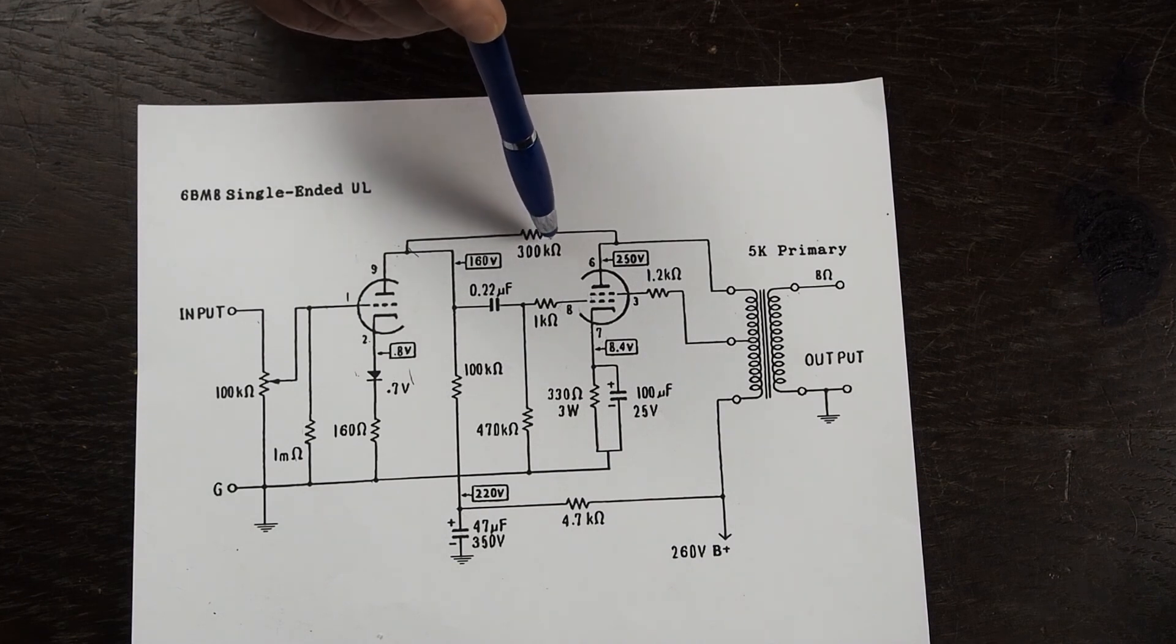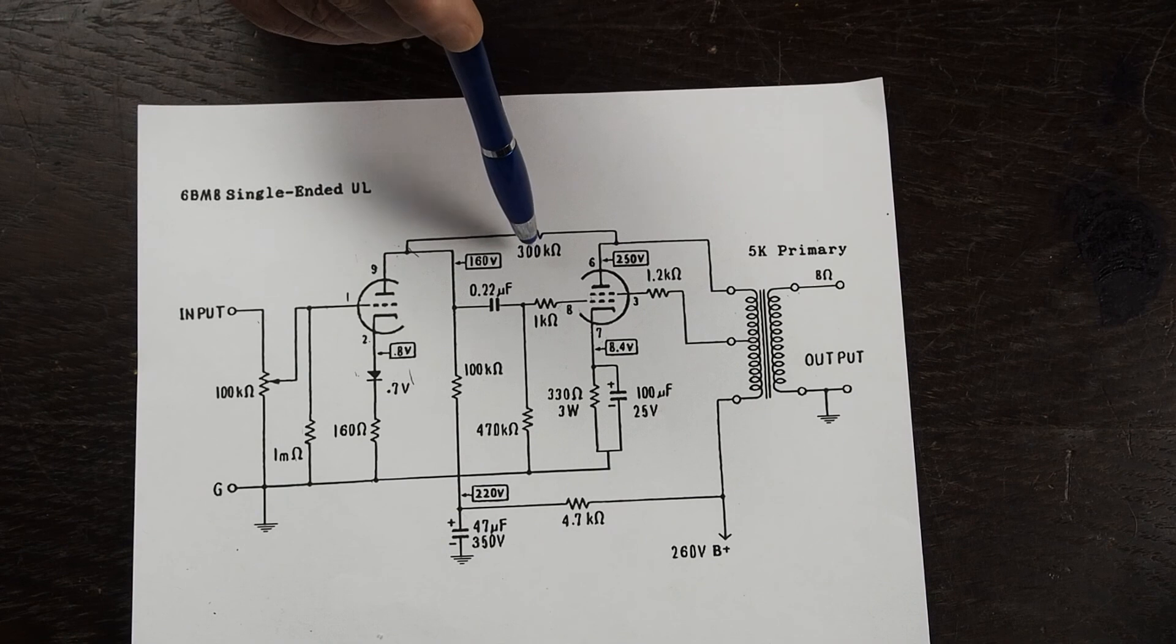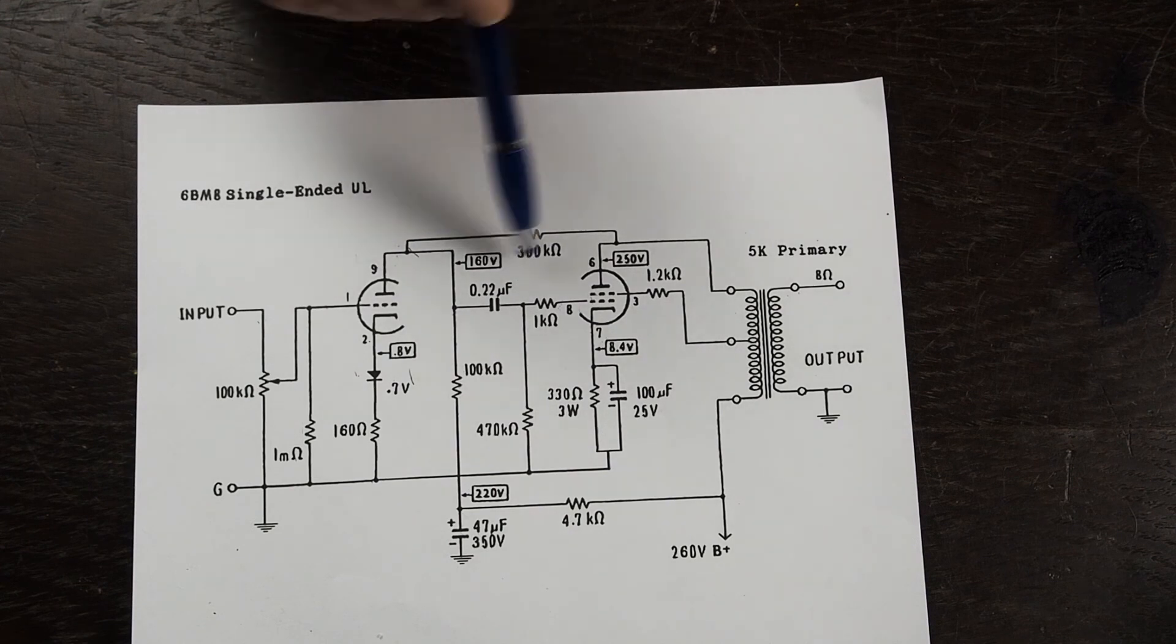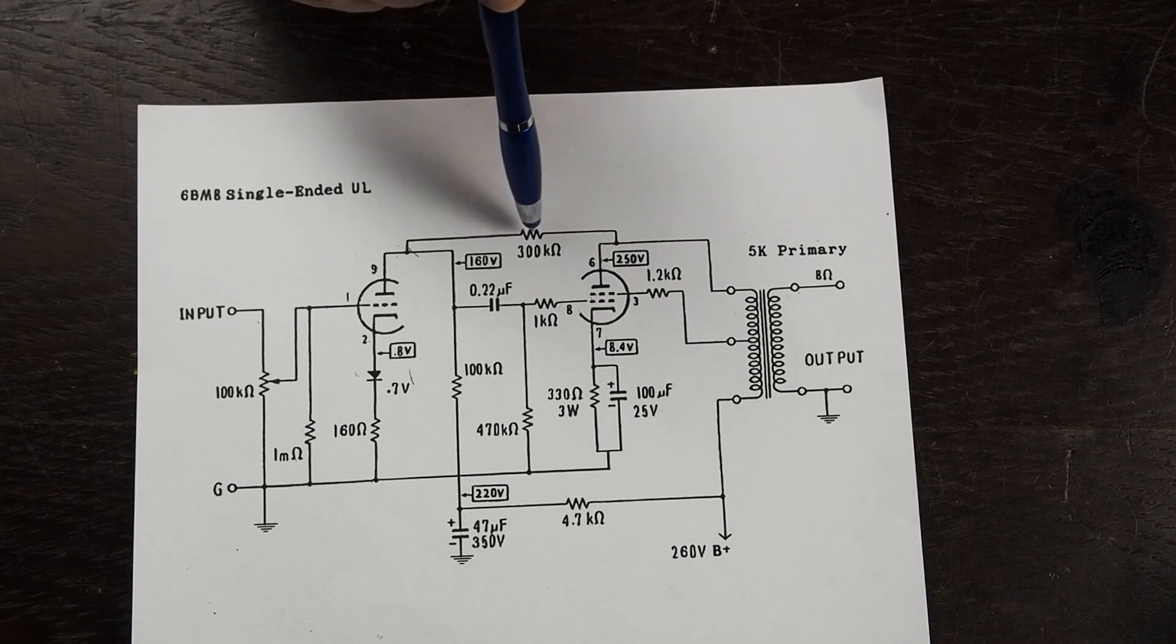It also changes the sound that you get out of the amplifier. We're going to start off with a 300k and we may go down to 200k we may go up to 400k. I'm not sure exactly where this is going to end up. I like this kind of feedback because it's not as sensitive to the brand and type of output transformer that's used.